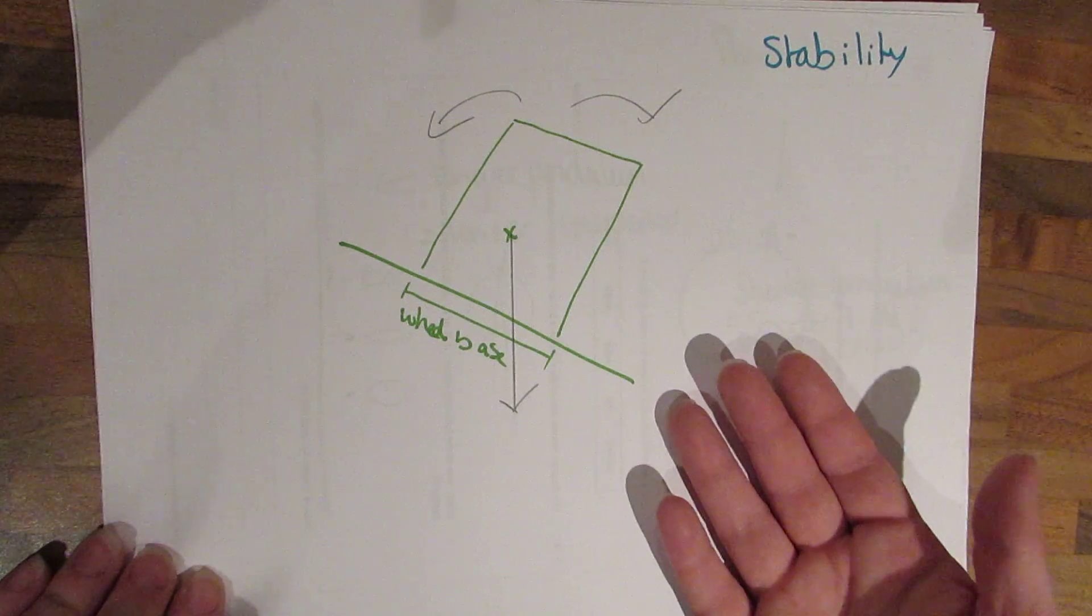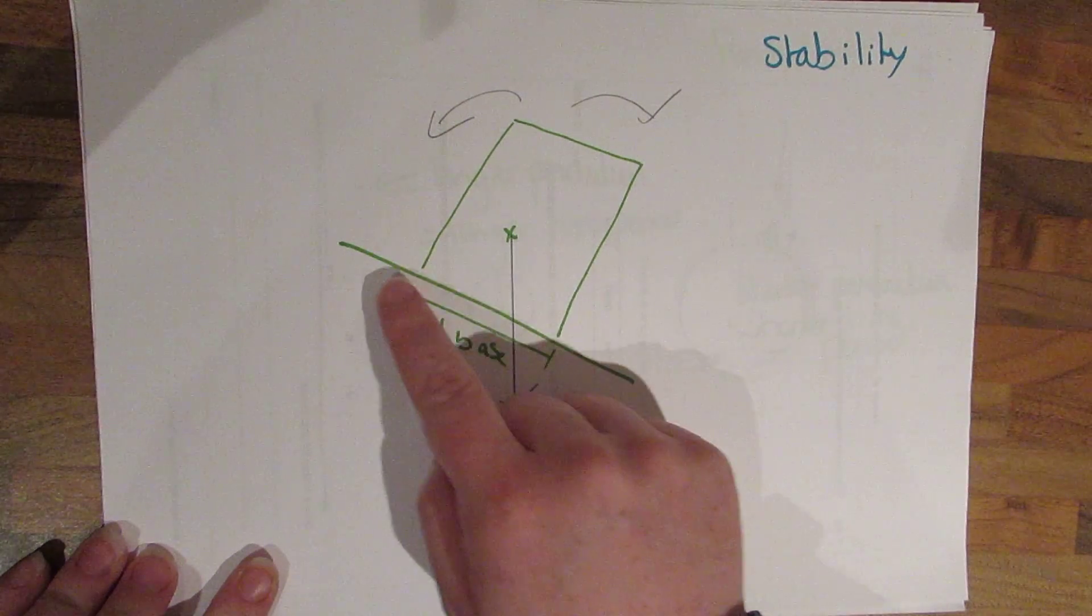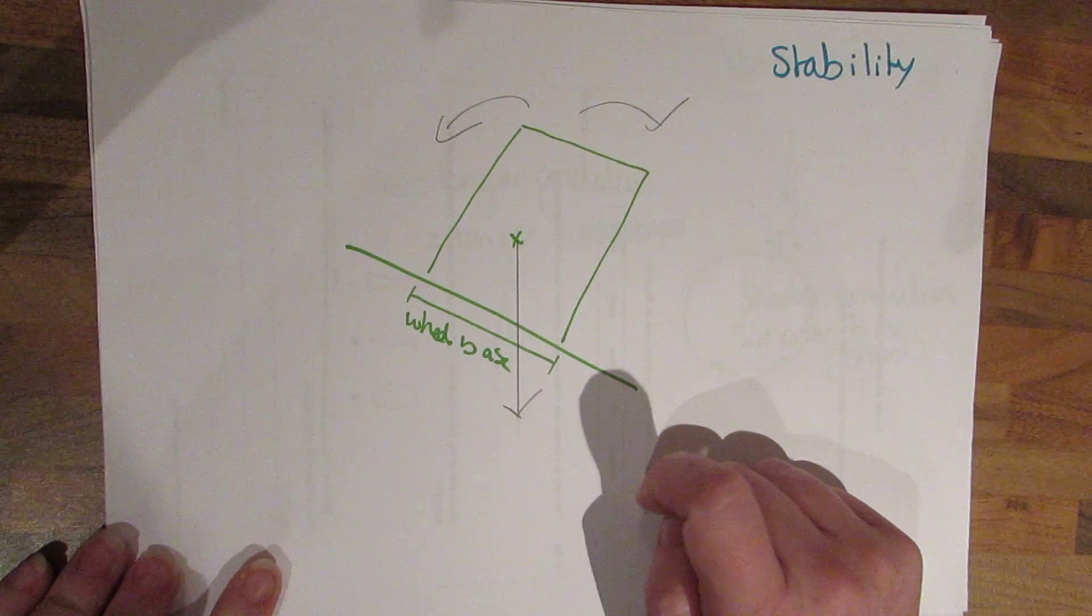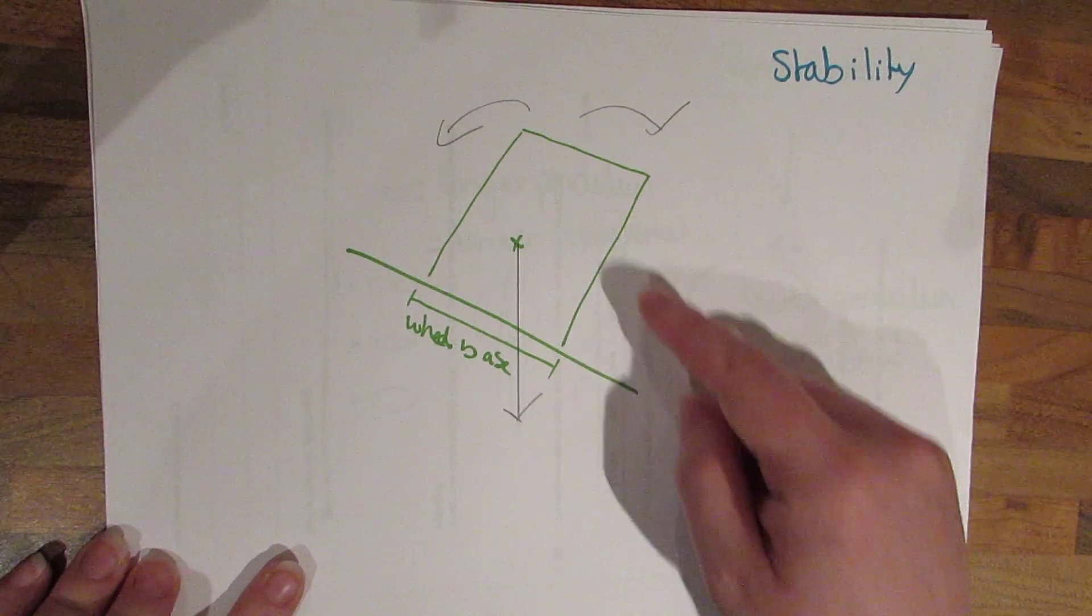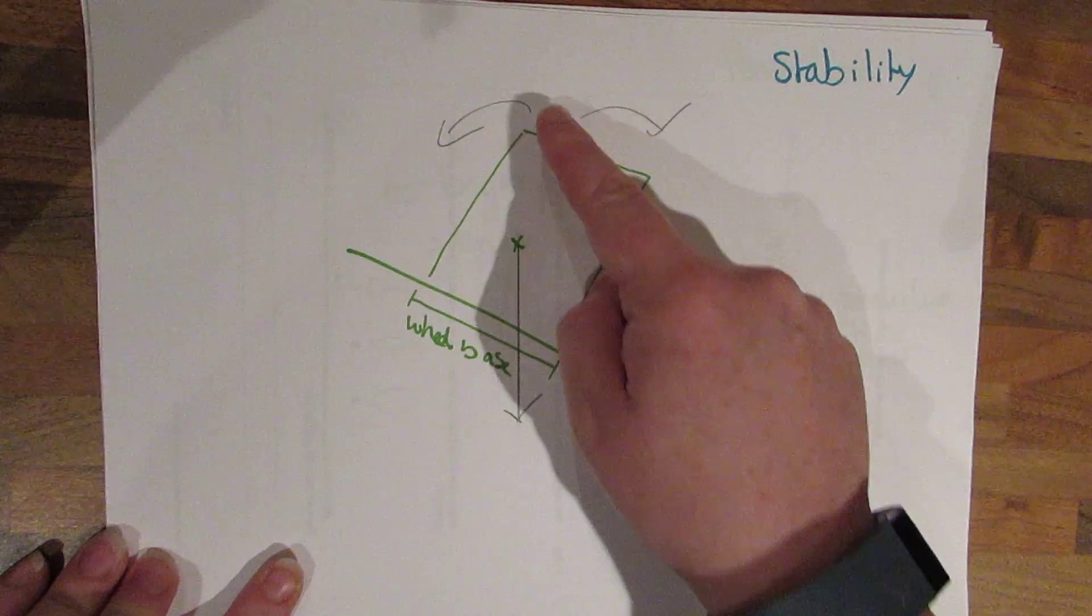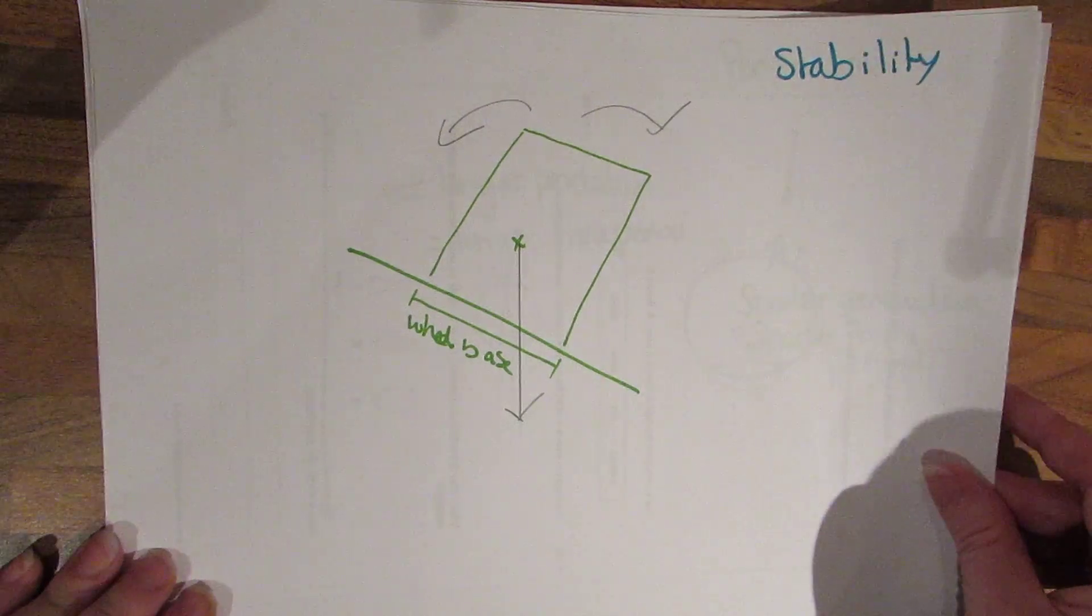If we have for example a tractor on a hill, if its centre of mass is between the wheelbase it's going to be stable. If it's not, its centre of mass falls over here, this is when you're going to get things that are toppling over.